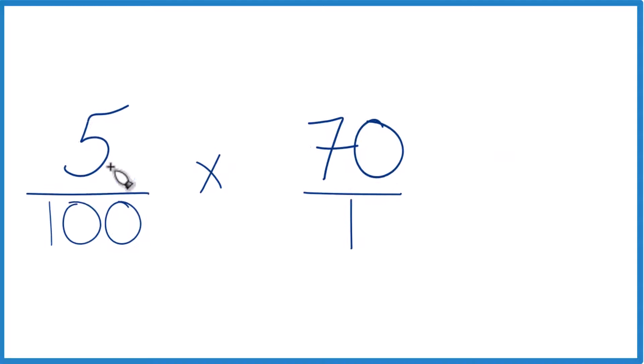70 over 1, same as 70. 5 times 70, that's 350, and 1 times 100, that's 100.